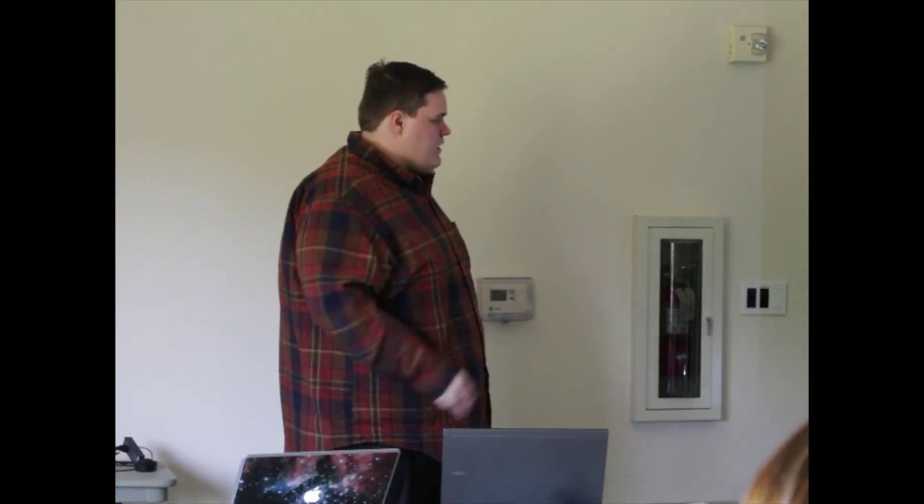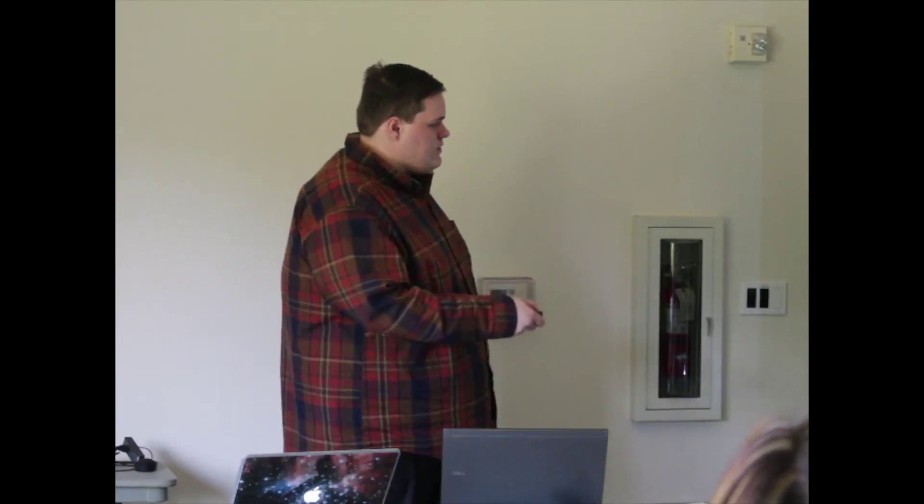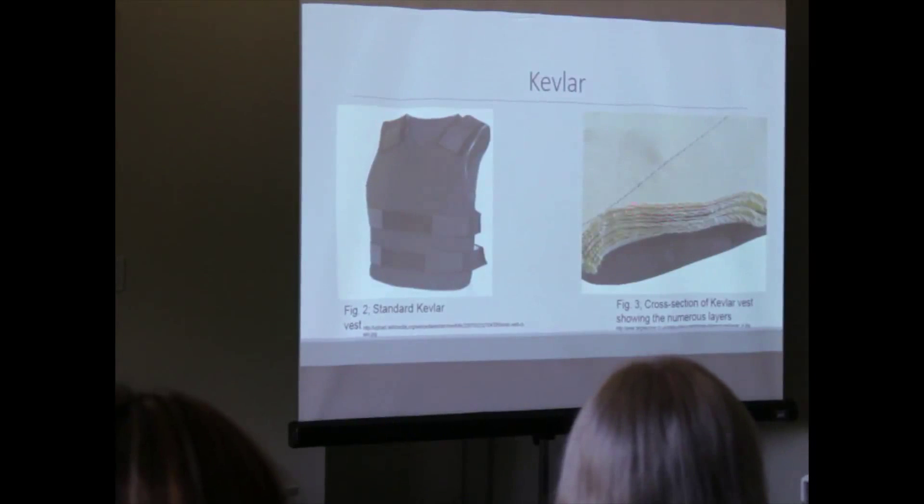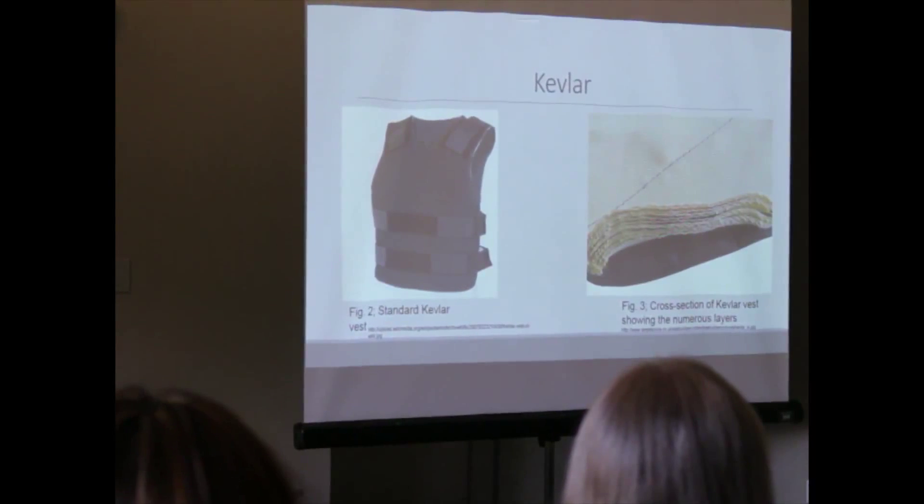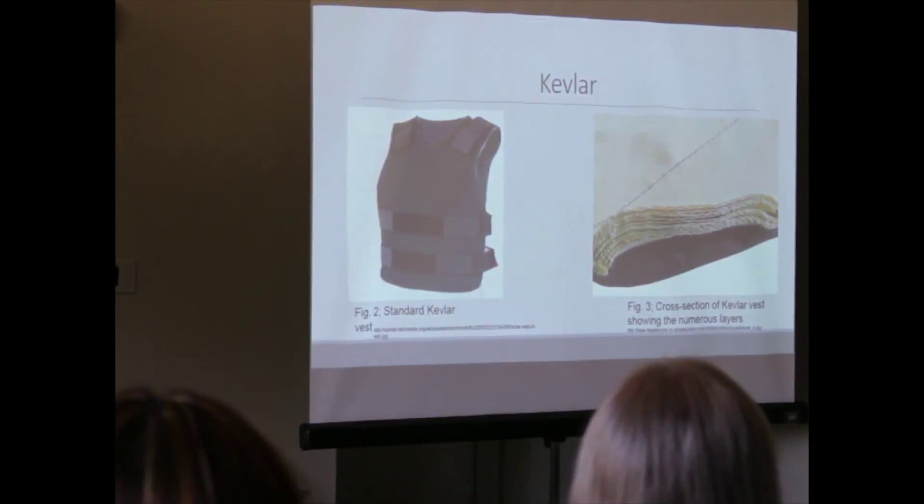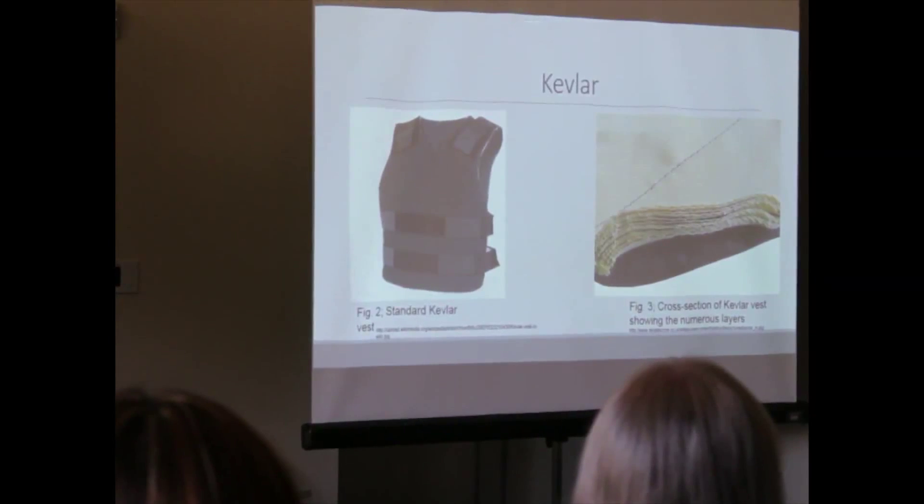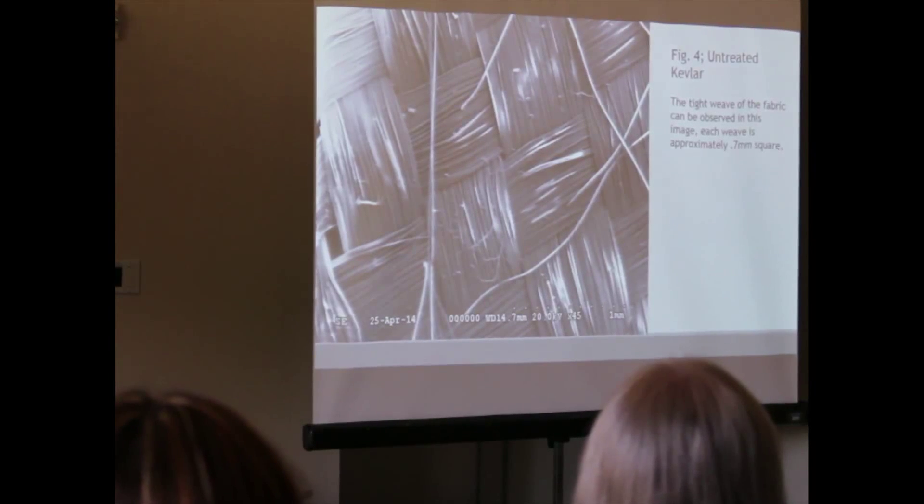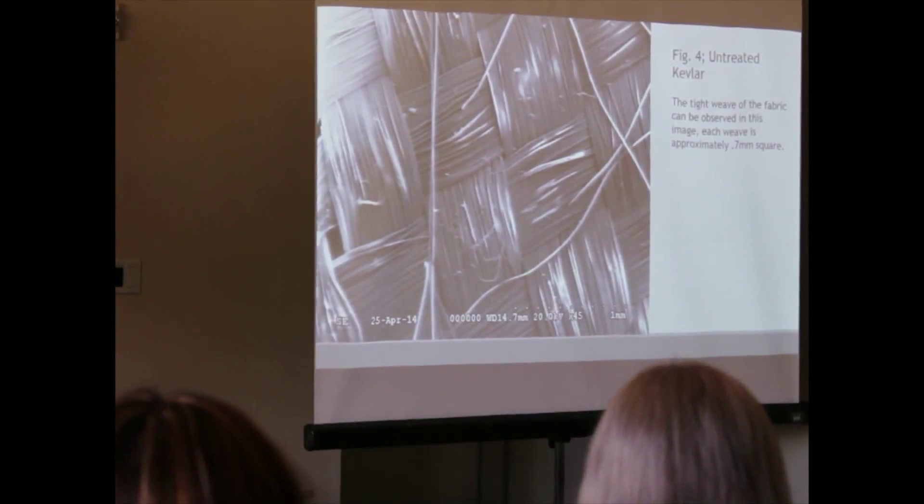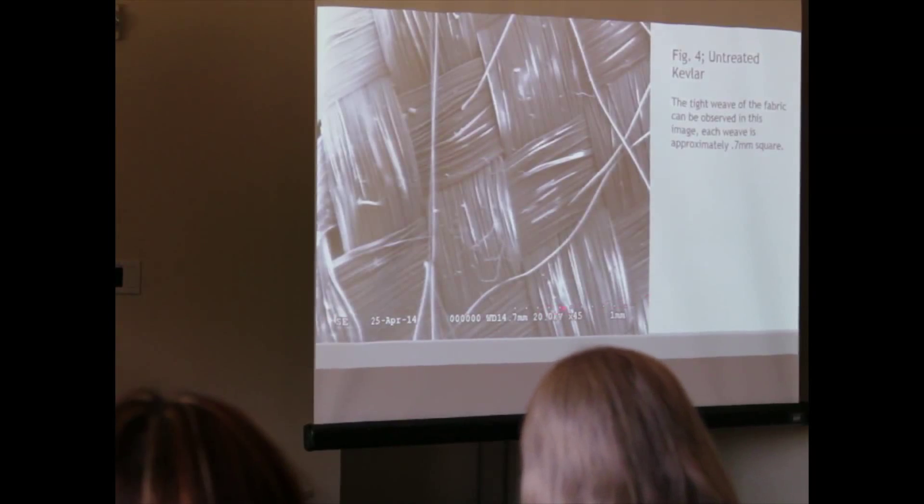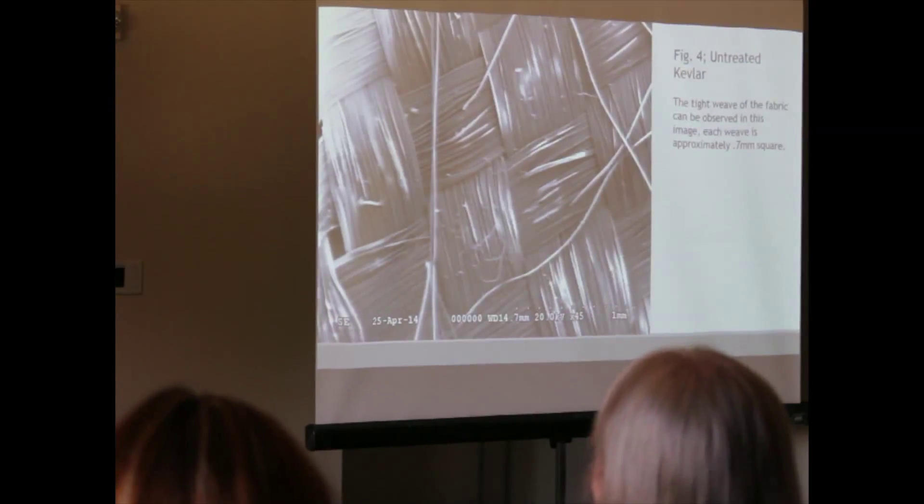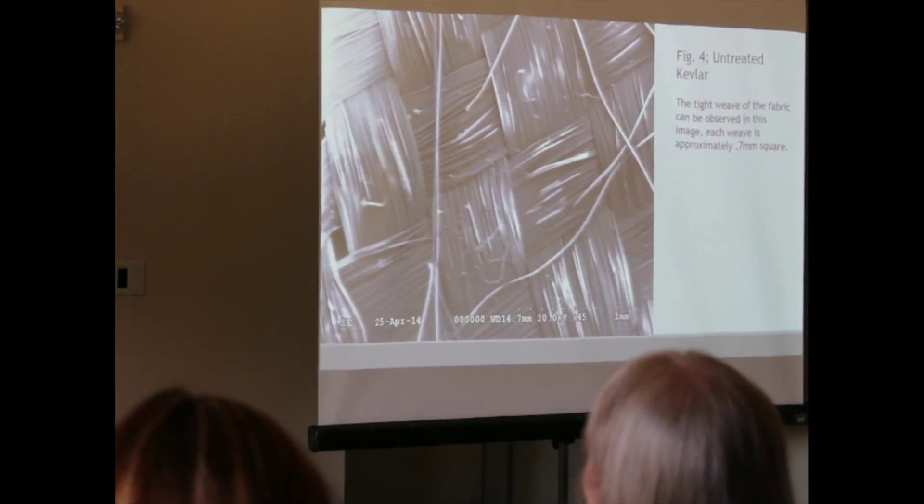This is just a standard bulletproof vest here. And this is basically a cross-section of that vest. And you can see that there's multiple layers of Kevlar, which are needed to protect from ballistic impact. And here's an SEM image of Kevlar. So you can see it's a really tight weave. This is at a one-millimeter scale. So it's really tightly woven. It's really good at protecting when it does, but it can't protect from higher velocity rounds or higher mass rounds.